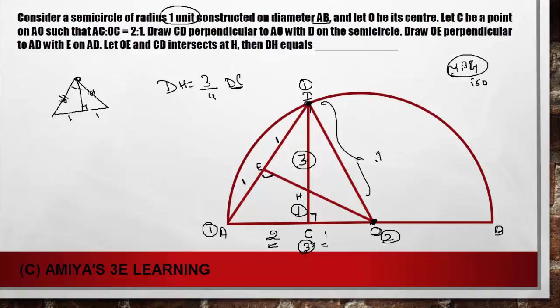It is given the radius is 1. So DO is 1. And AO should also be 1. And they divide the ratio of 1 to 2. So we can say CO is 1/3 of the radius. So CO is 1/3. DO is 1. And we have a right angle triangle. So by Pythagoras we can say DC squared is DO squared minus CO squared. So we can say DC squared is 1 minus 1/9. So DC is square root of 8/9, or we can say this is 2√2 divided by 3.